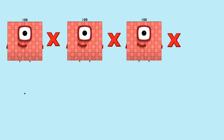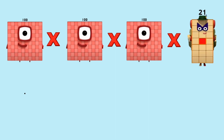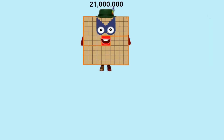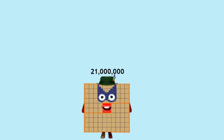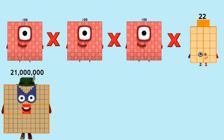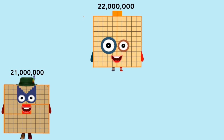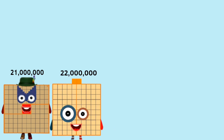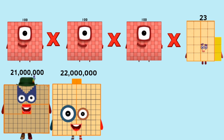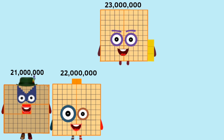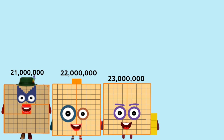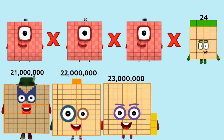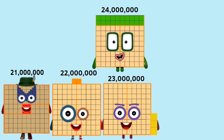100 times 100 times 100 times 21 equals 21,000,000. 100 times 100 times 100 times 22 equals 22,000,000. 100 times 100 times 100 times 23 equals 23,000,000. 100 times 100 times 100 times 24 equals 24,000,000.